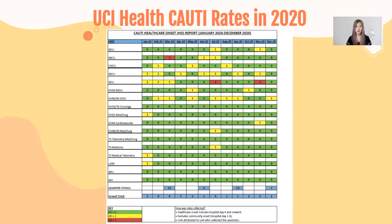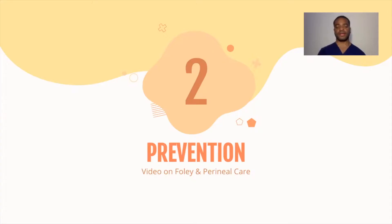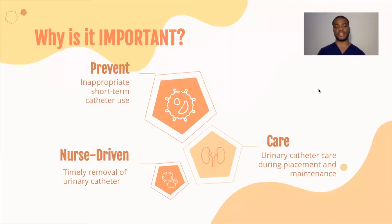According to a public health report on infections, it is estimated that 69% of all CAUTIs are avoidable. CAUTI prevention aims to reduce the rate of CAUTI by preventing inappropriate short-term catheter use, promoting nurse-driven timely removal of urinary catheters, and applying aseptic catheter care during placement and maintenance.